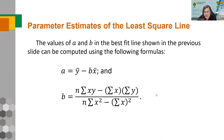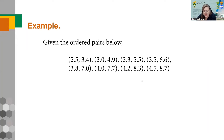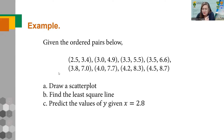For example, we have eight ordered pairs. The first number in each pair is x and the second is y. We will draw a scatter plot by plotting the points on the x-y plane, then find the least square line, and predict the value of y when x is 2.8. To solve, we organize the data in columns: x, y, and then compute x times y and x squared.